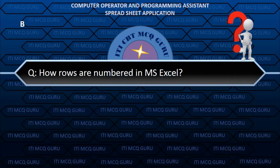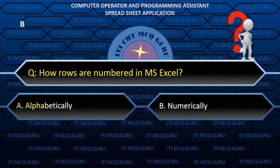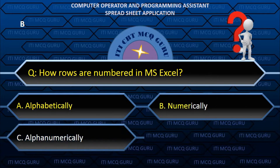How rows are numbered in MS Excel? B. Numerically.